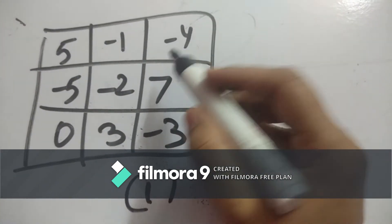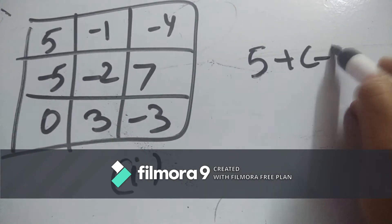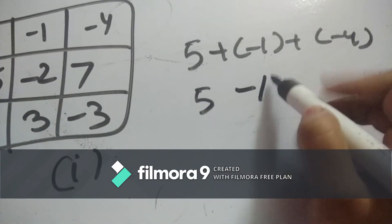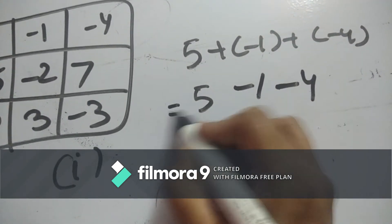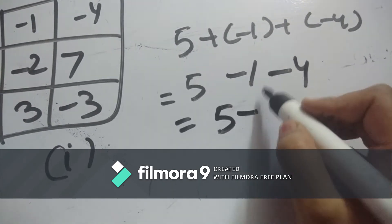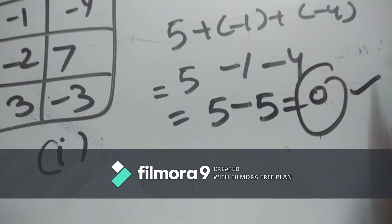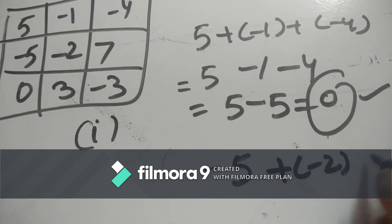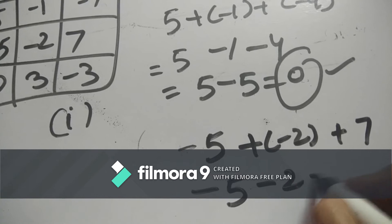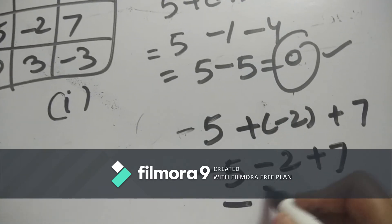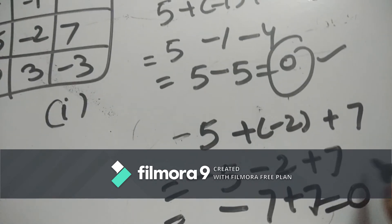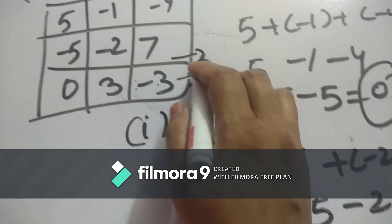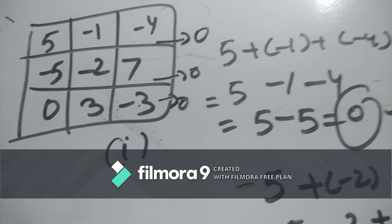For the first magic box, checking the first row: the result is 0 because minus minus becomes plus, giving 0. Second row: minus 5 minus 2 plus 7 — minus 7 plus 7 equals 0. Third row also gives 0. So all three rows have a sum of 0.